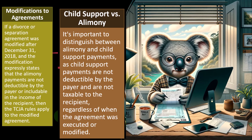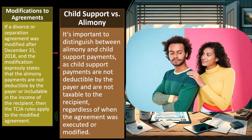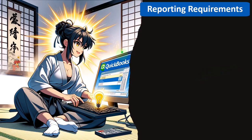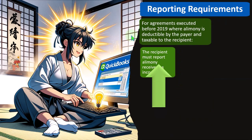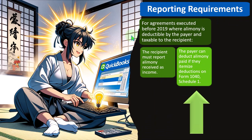This was always the issue before because they could do sneaky things and not expressly state whether something is alimony or child support. Then we have to do tests to see whether the payments that were agreed upon going from one spouse to the other qualify as child support or alimony, which was a pain and could cause further litigation. Reporting requirements: for agreements executed before 2019 where alimony is deductible by the payer and taxable to the recipient, the recipient must report alimony received as income. The payer can deduct alimony paid if they itemize deductions on Form 1040, Schedule 1.